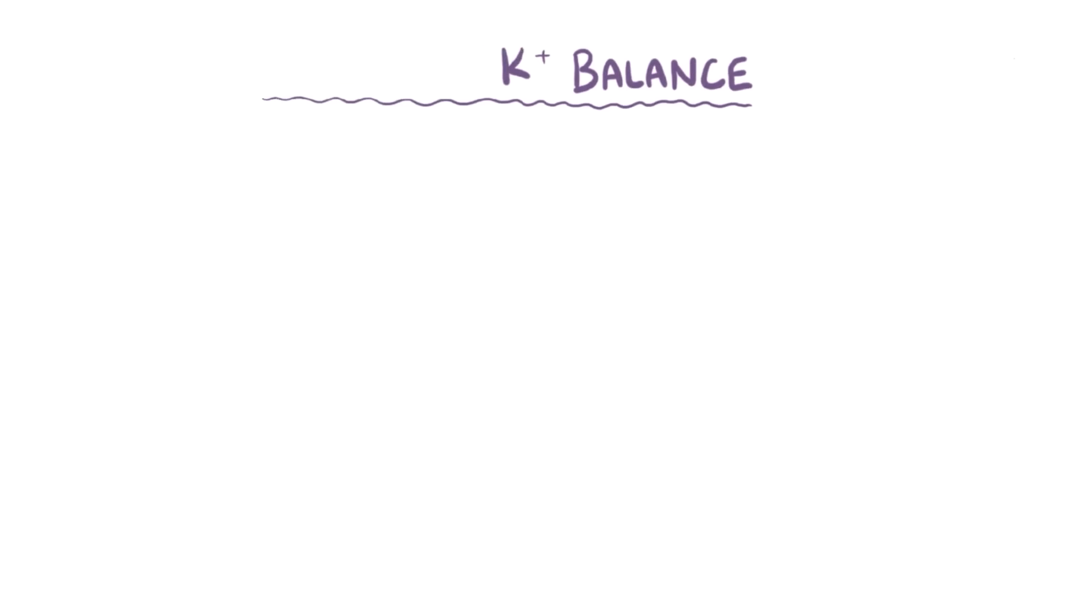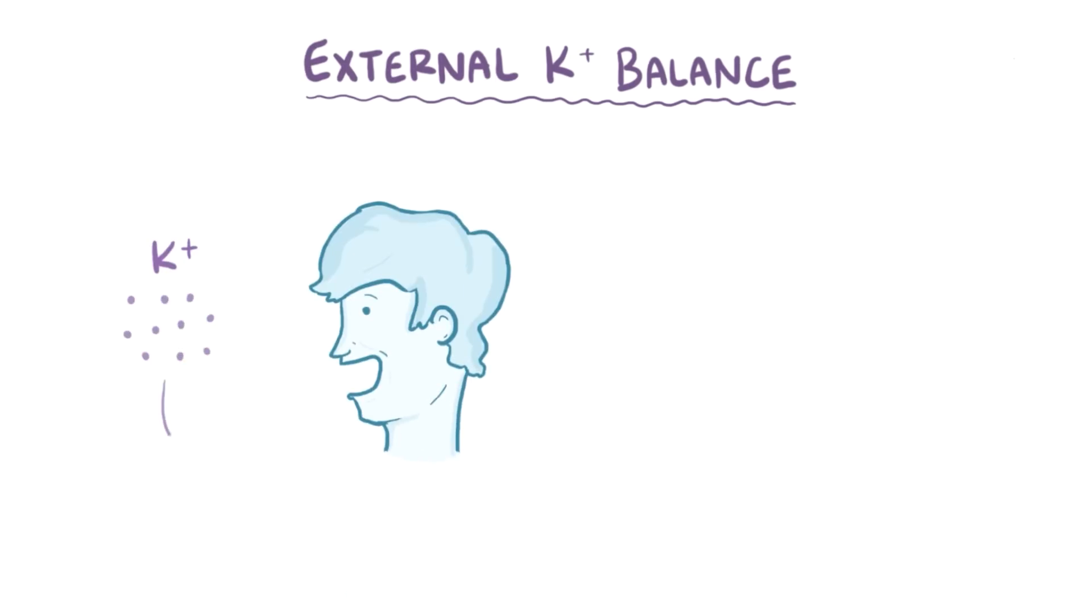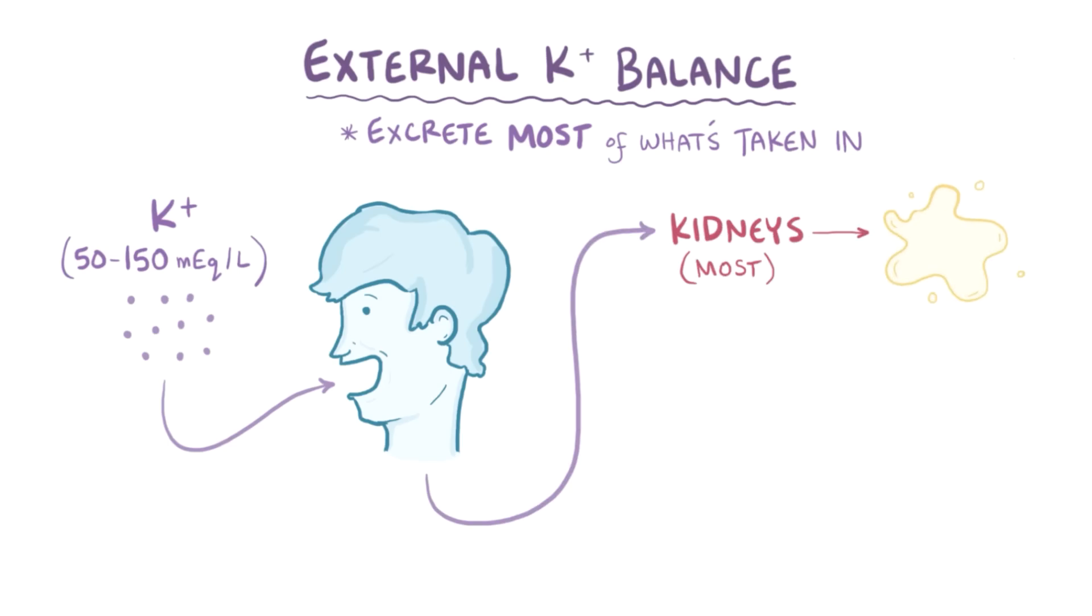Also, though, in addition to this internal potassium balance, there's also an external potassium balance, which refers to the potassium you get externally through the diet every day. On a daily basis, the amount of potassium that typically gets taken in usually ranges between 50 to 150 milliequivalents per liter, which is way higher than the extracellular potassium concentration of 4.5 milliequivalents per liter. So your body has to figure out a way to excrete most of what it takes in. This external balancing act is largely taken care of by the kidneys, where excess potassium is secreted into a renal tubule and excreted in the urine. Also, a small amount of dietary potassium is also lost via the gastrointestinal tract and the sweat.